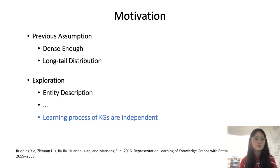Most previous shallow models always assume that knowledge graphs are dense enough, and the standard datasets used for tests also remove low-frequency entities and relations. However, in the real world, entities always have a long-tail distribution. That means most entities only have few triplets for training. Some work has explored how to solve this problem, such as introducing entity descriptions or co-training with language models. But these solutions all require lots of external computation.